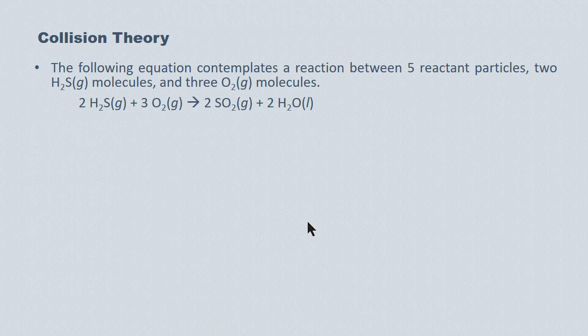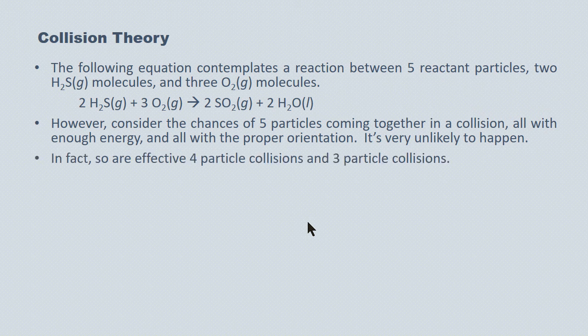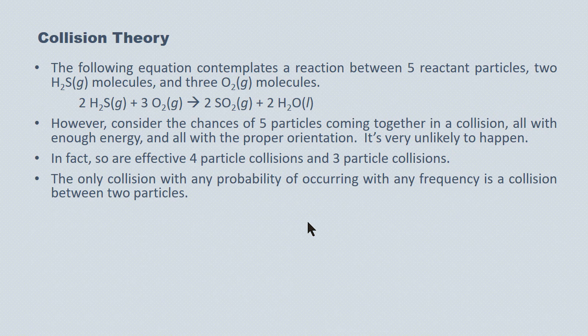The following equation represents a reaction between two hydrogen sulfide molecules and three oxygen molecules to produce the given products. However, consider the chances of five particles coming together, all with enough energy and all with the proper orientation to chemically react — it's very unlikely. In fact, effective four-particle collisions and effective three-particle collisions are also very highly unlikely. Under collision theory, the only collision with any probability of occurring with any frequency is a collision between two particles.